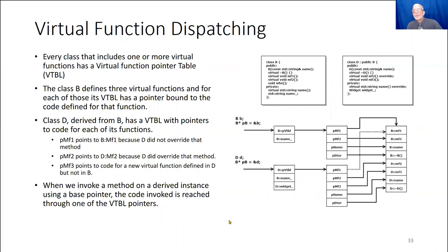Here's how this works: virtual function dispatching. Suppose we have a class B with a base constructor that accepts a name, a virtual destructor, a virtual member function one, a virtual member function two, and a non-virtual function who. It has a private virtual function name, and a private data member name. Presumably, member function one or the constructor may call this string name, resulting in some mutation of the name value.